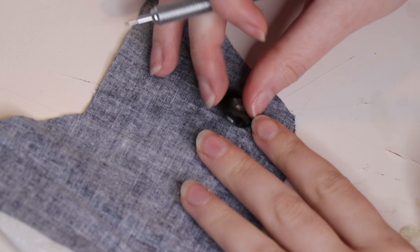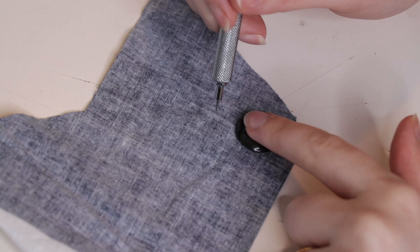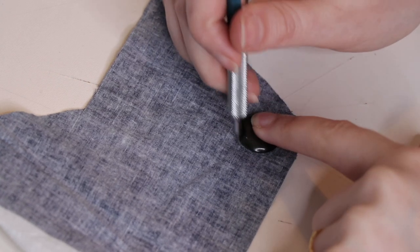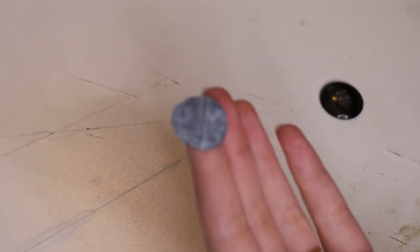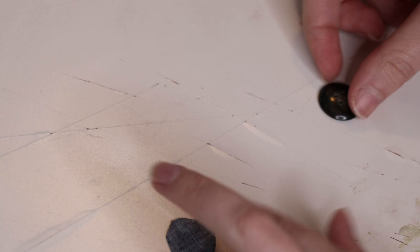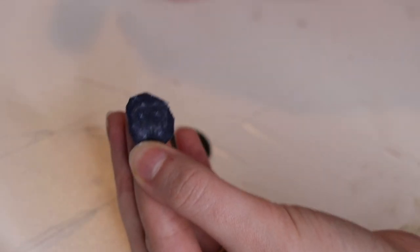Alright so first you're going to take your button and you're going to use it as a template to trace around and make the base circles like that. But what I'm going to do now is take my glue stick, put some glue, and then I'm going to put it on top of the rounded side of the button.